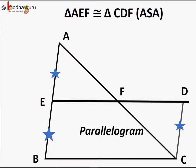So for quadrilateral BEDC, BE and CD are parallel and also equal. Hence, it is a parallelogram. Hence, ED and BC are also parallel, as opposite sides of a parallelogram are parallel.